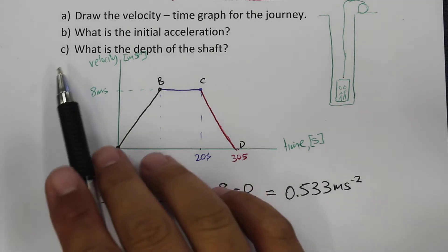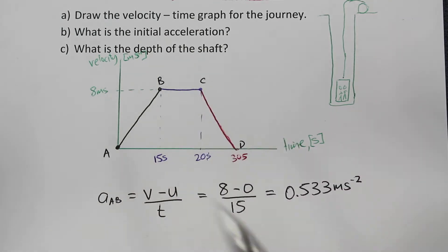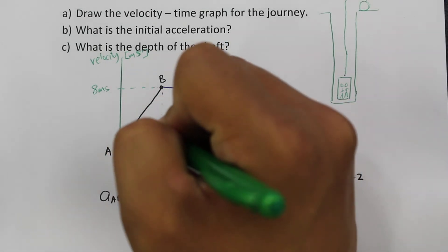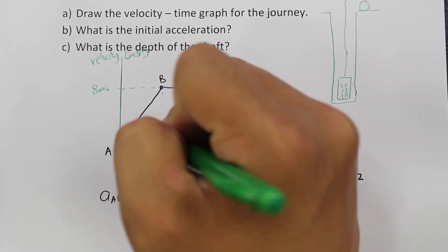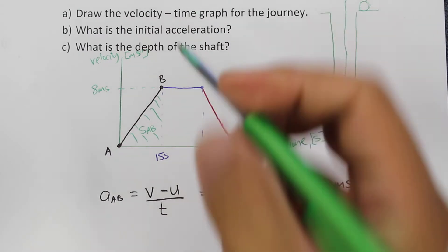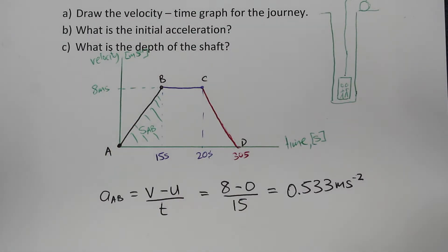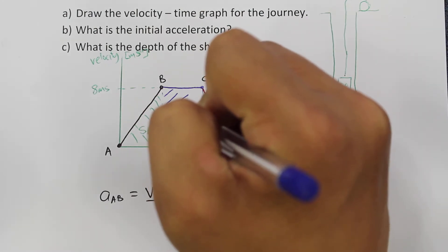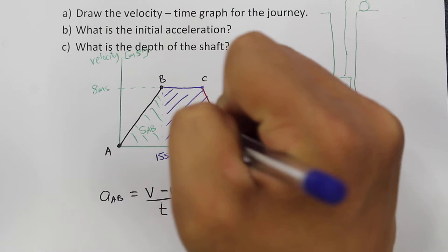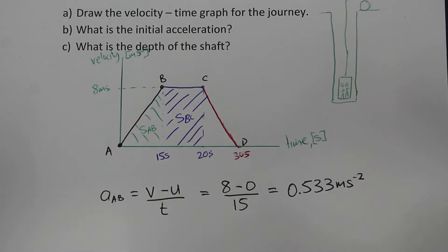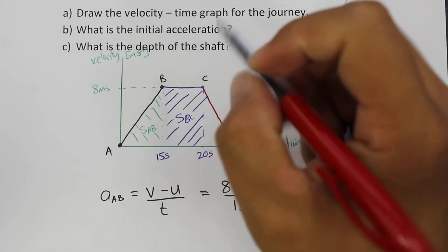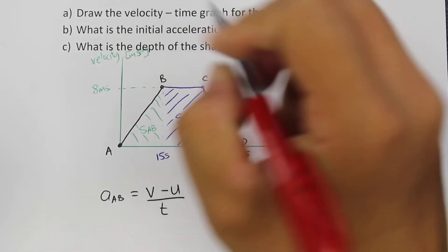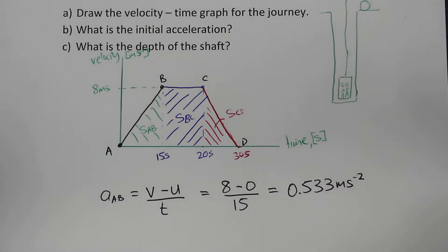The third question is: what is the depth of the shaft? The depth of the shaft equals the total area underneath the velocity versus time graph. The area under section A to B gives the distance from A to B; the area from B to C gives the distance from B to C; and the area from C to D gives the distance from C to D.